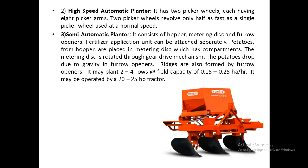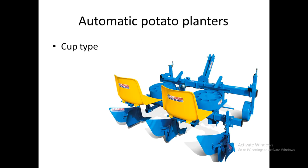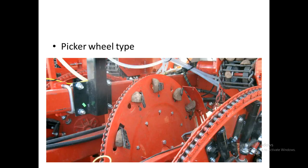The high-speed automatic planter has two picker wheels each with eight picker arms. It is faster than the standard automatic type planter but the components are otherwise similar. The semi-automatic planter consists of a hopper, the metering device, and furrow openers. Fertilizer application units can also be combined with the seed box for placing fertilizers along with seeds.